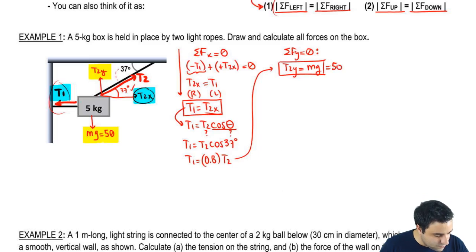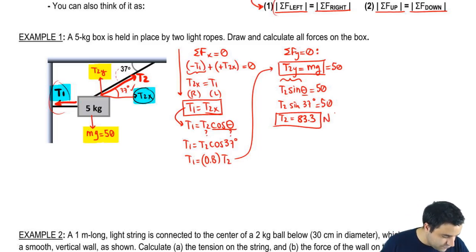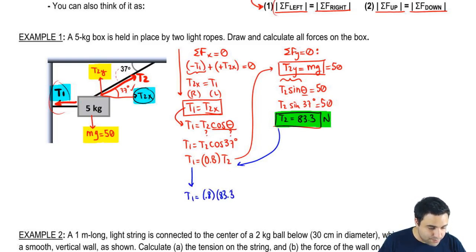And I do know mg, I know mg is 50, and again, because I know one of the two variables that T2y can be changed into, T2 sine of theta, I know theta, then I'm going to expand T2y. So T2 sine of 37 equals 50. If I move things around, T2 I find to be 83.3. That's the first answer, and obviously to get the second answer, I just have to plug this back in here, so T1 is 0.8 times 83.3, which is 66.7 Newtons, and that is my second answer.